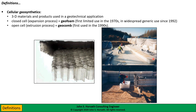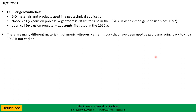I've always been very surprised that the world in general has not embraced geocombs more than has been to date, but that's a story for another presentation — we're here today to talk about geofoams. Many different materials have been used as geofoams going back to at least 1960 if not earlier: polymeric materials (what the layperson would call plastic), vitreous materials such as glass foams, and cementitious foams using Portland cement. So there are many, many different geofoam materials.